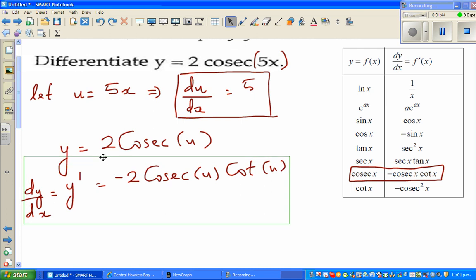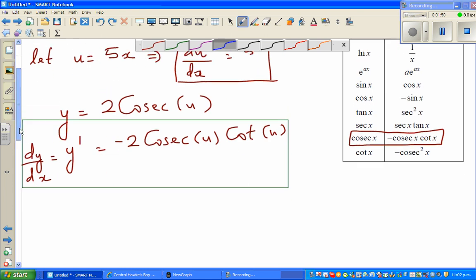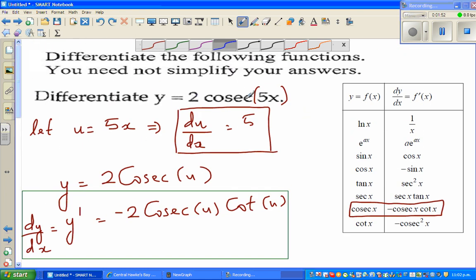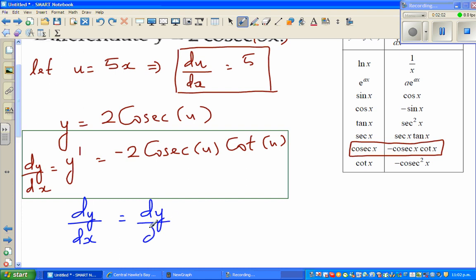Now I'm going to use the chain rule. What does the chain rule say? Chain rule is: we want to differentiate this with respect to x, so we want to find dy/dx. That's the question. So I can say dy/dx is dy/du times du/dx.